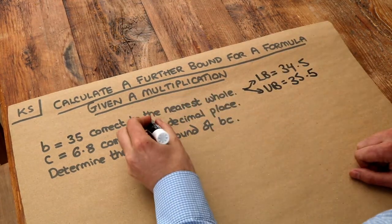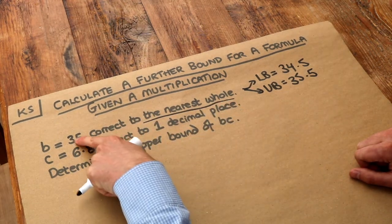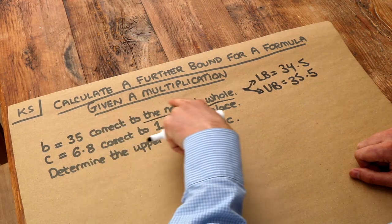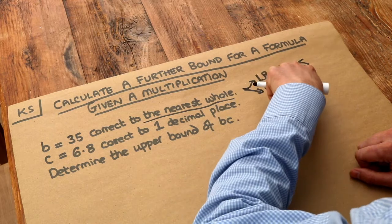So remember, we take half the accuracy, so half of a whole is 0.5, and then we add or subtract that to that number. So 35 plus 0.5 is 35.5, and 35 minus 0.5 is 34.5.